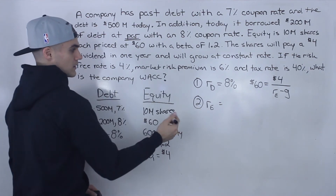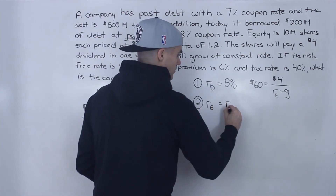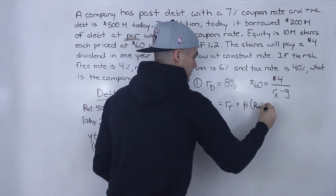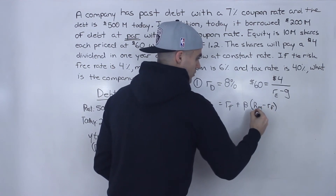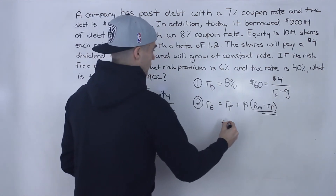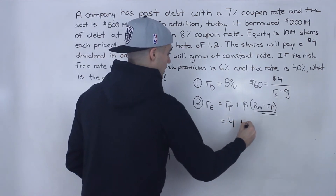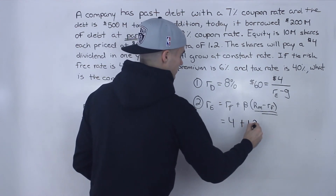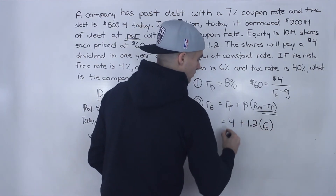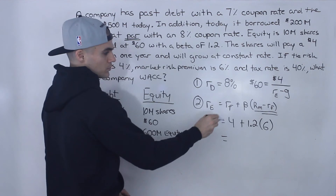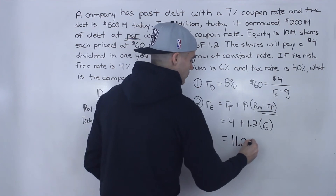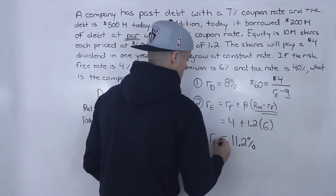So to find the cost of equity, we're going to use the CAPM model: risk-free rate plus beta times (return on the market minus the risk-free rate), where that bracket is the market risk premium. The risk-free rate is 4%, beta is 1.2, and the market risk premium is 6%. So: 1.2 times 6 gives us 7.2, plus 4, gives us 11.2%. Step two is complete — the cost of equity is 11.2%.